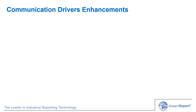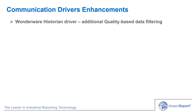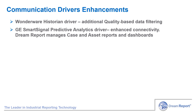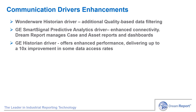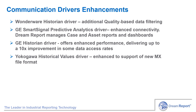As always, we're developing new or enhancing existing communication drivers. With the existing Wonderware historian driver, we've included a filtering option based on a specific data quality. A customer requirement has been to ignore a value at the start of a query period if needed, and this option is now exposed. We've enhanced the GE SmartSignal Predictive Analytics driver with new functionality. And with the existing GE historian driver, the connectivity has been optimized to deliver up to a 10 times performance improvement in certain scenarios. And finally, the Yokogawa Historical Values driver has been updated to support Yokogawa's newer MX file format.